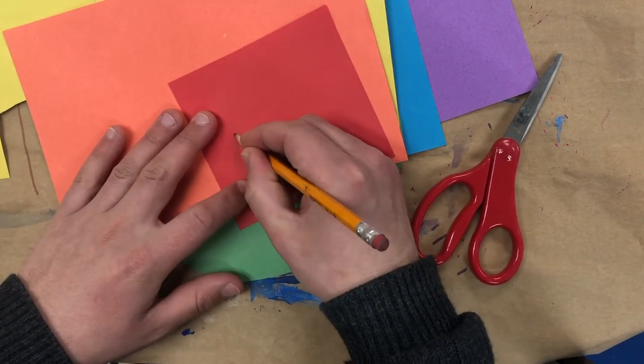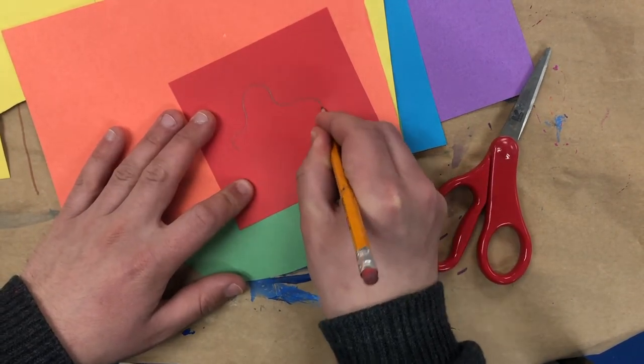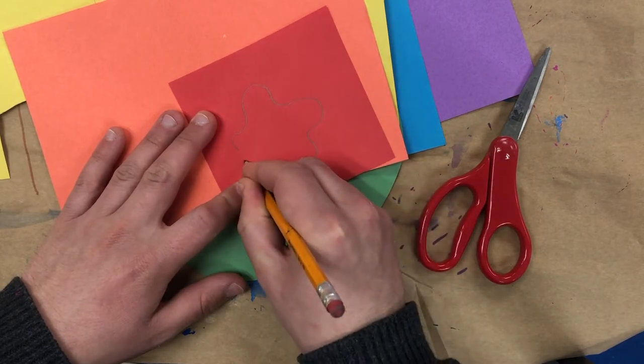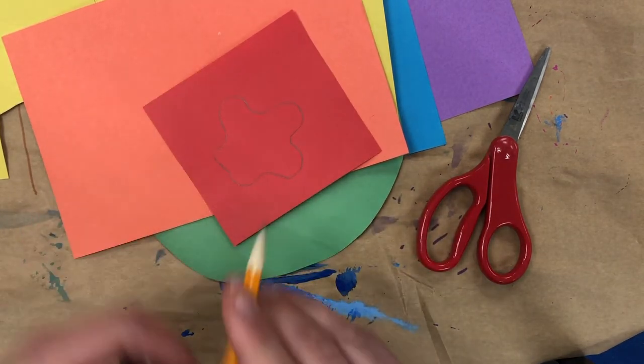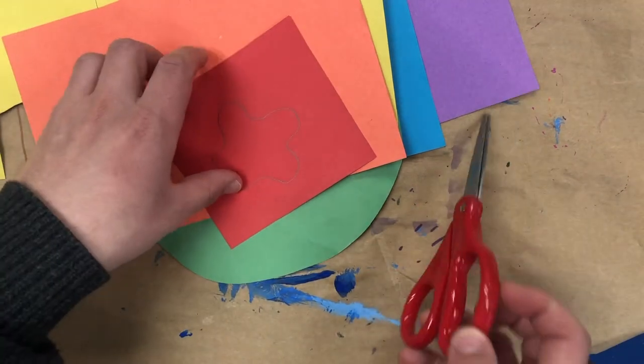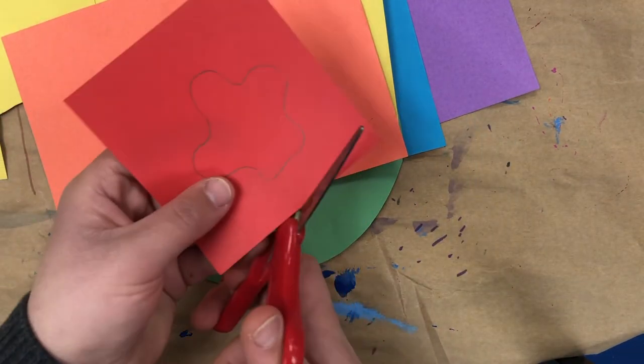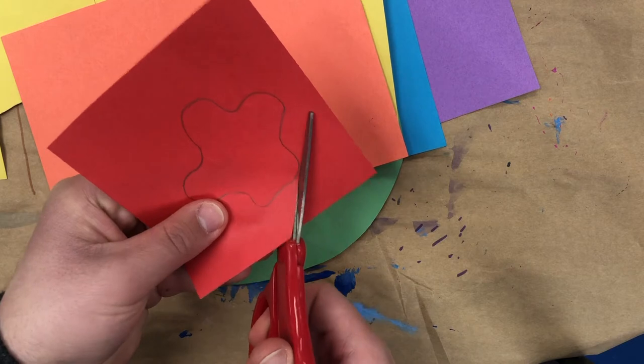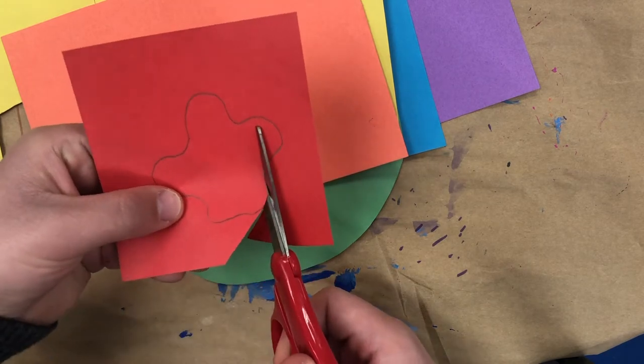So I'm going to start just making a fun shape and I'm going to do kind of a rainbow Roy G Biv pattern. So red, orange, yellow, green, blue, indigo, violet.